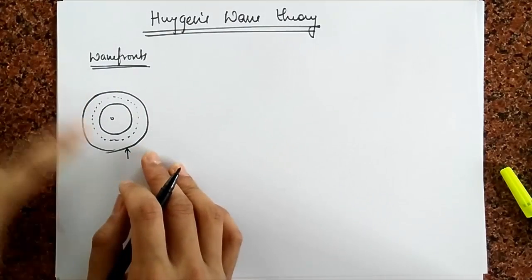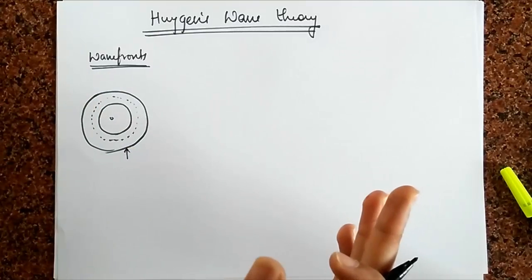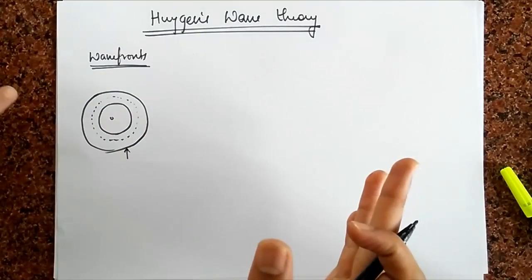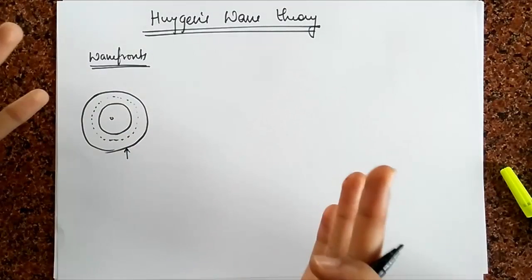So when you have a point source, like when you drop a stone, you end up with a circular wave front, provided you are in two dimensions. And if you are in three dimensions, you end up with spherical wave fronts.